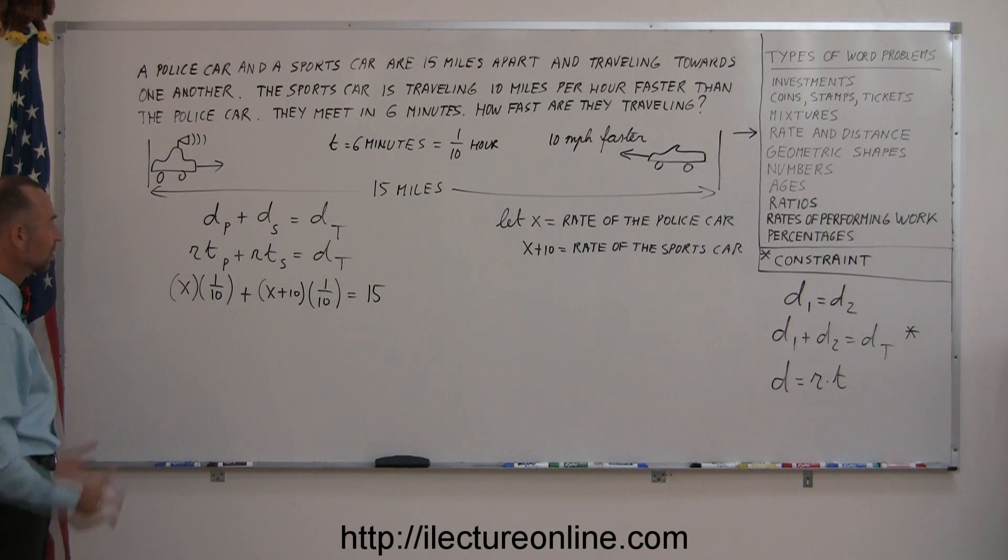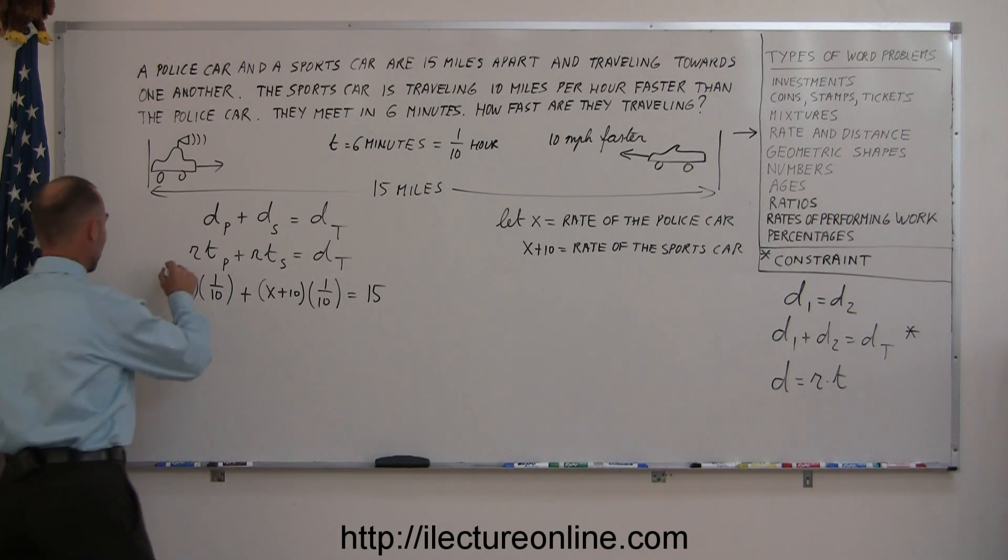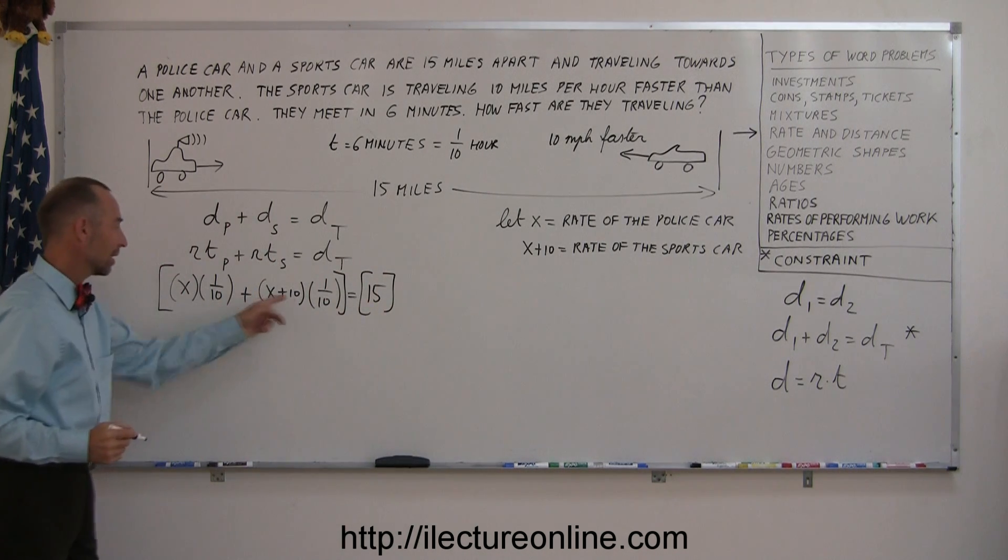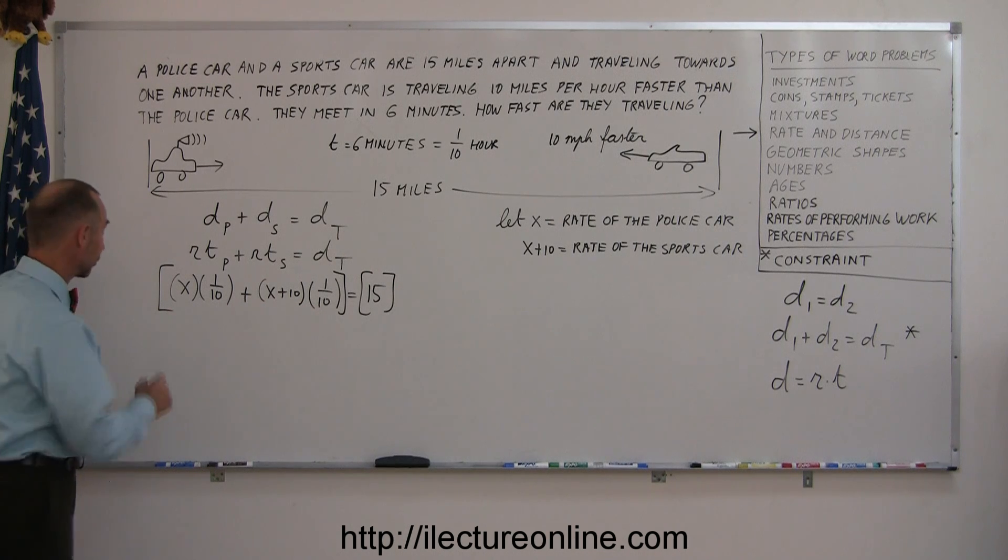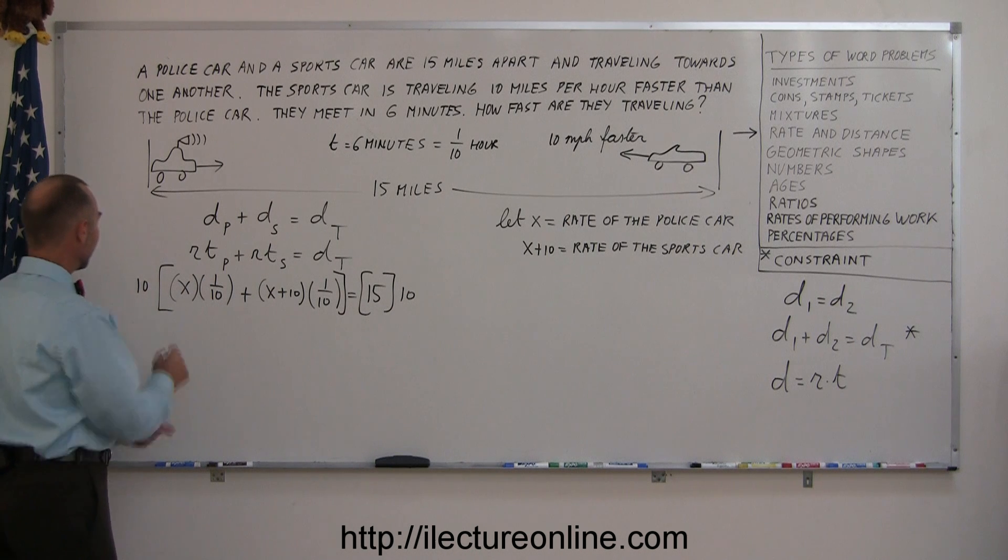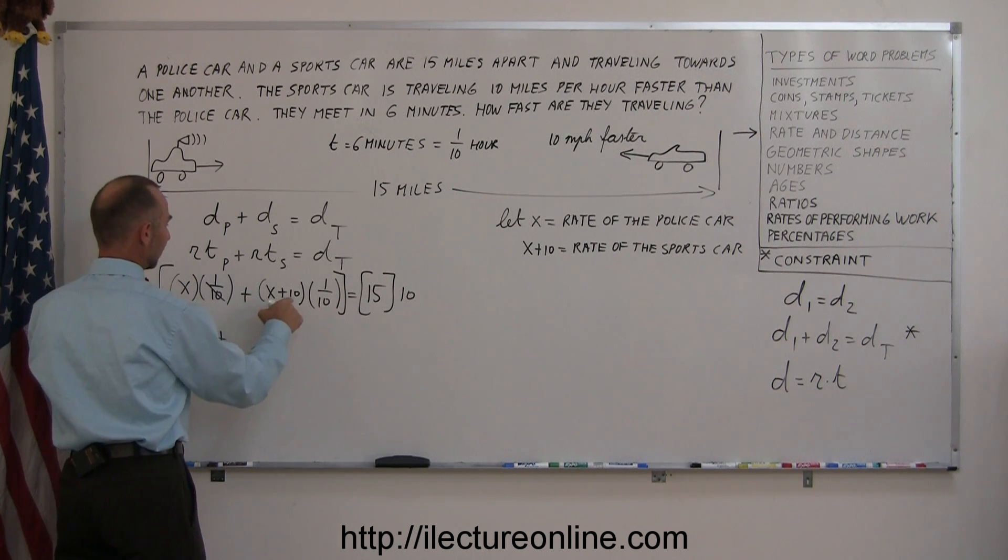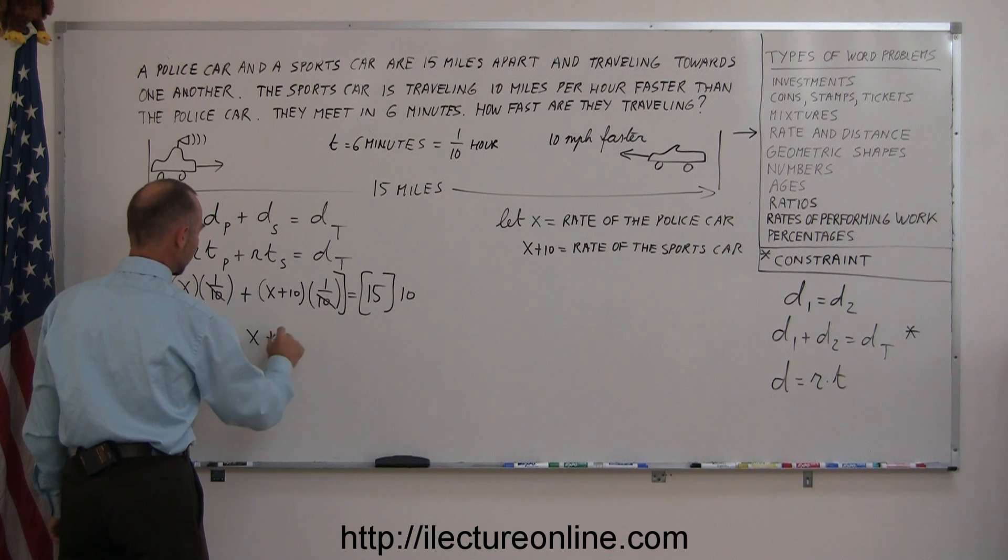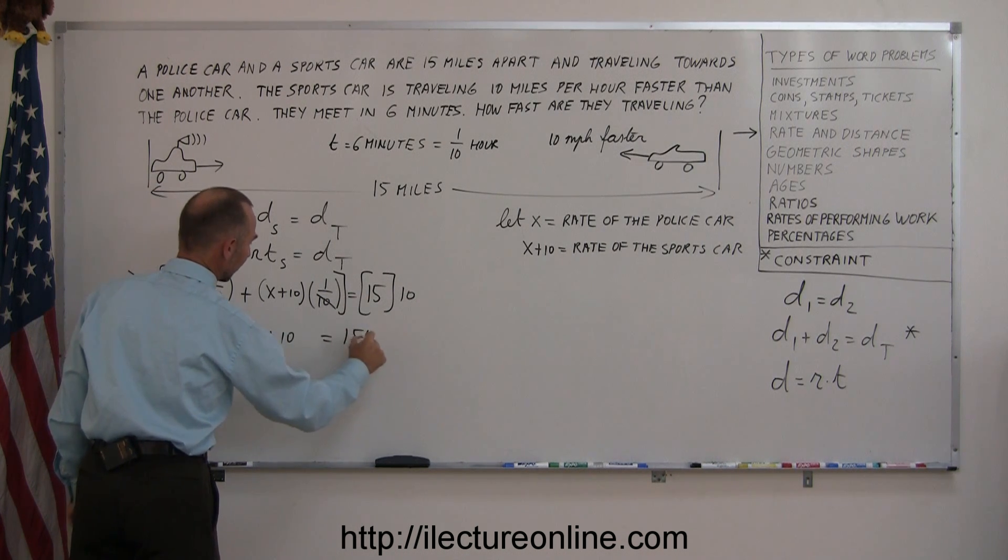All right. Now we have our equation and we're ready to solve it. I have fractions in there. So before I go any further, I want to multiply both sides of the equation by a number to get rid of fractions. And since the common denominator here is 10, I'm going to multiply both sides of the equation by 10. So 10 times one-tenth, this cancels out this. So we have X plus... And 10 times one-tenth, that cancels this one out as well. So we end up with X plus 10 equals 10 times 15, which is 150.